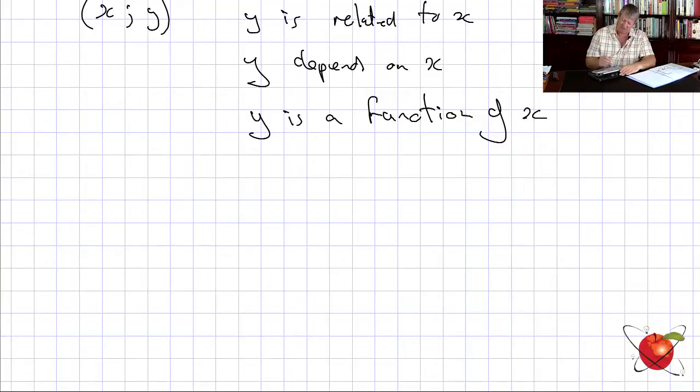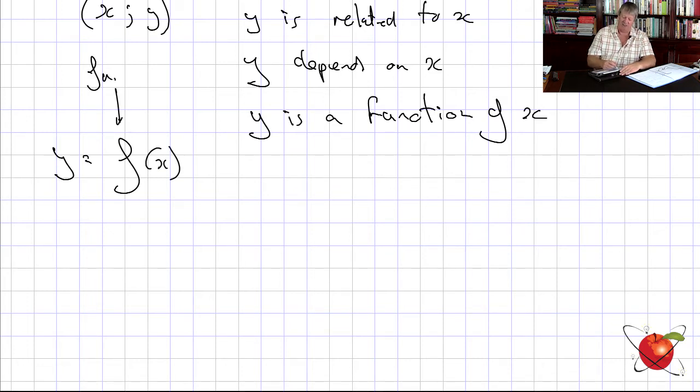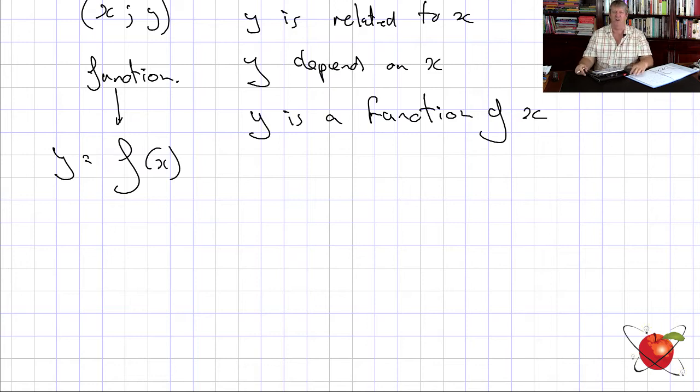The x and y are an ordered pair. If you've got an x you can work out a y, and vice versa, as long as you've got the function that defines them. This relationship is the function, and in maths we write: y is a function of x.